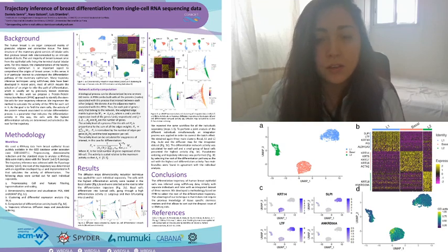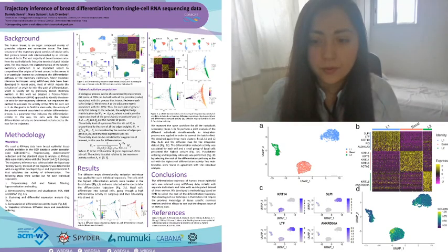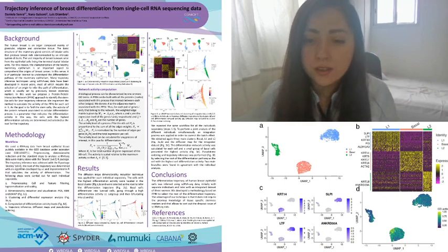We obtained three main clusters which after some differential expression analysis we annotated as basal, luminal 1 and luminal 2. In Figure 1D cells are represented in the UMAP space and colored by the cell differentiation activity level.